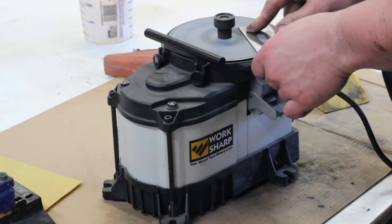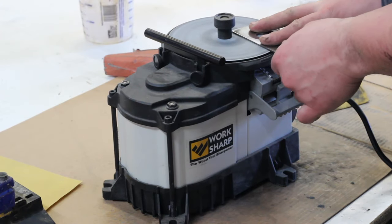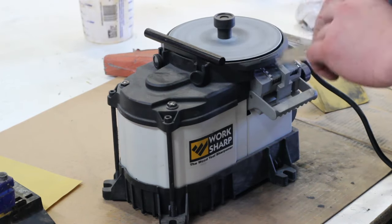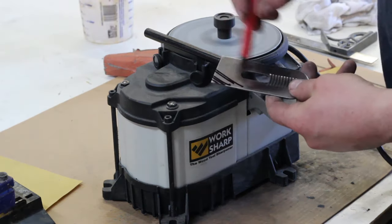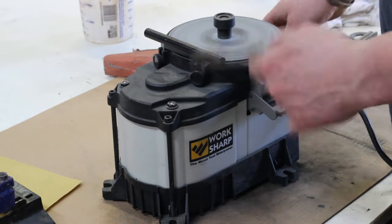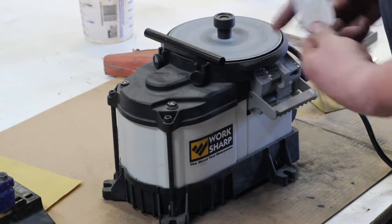So I busted out the work sharp, sort of flattening the back with the hopes that it would take enough off the front of the blade that it would naturally bring itself back to 90. But after a little bit, you can see that that wasn't the case.